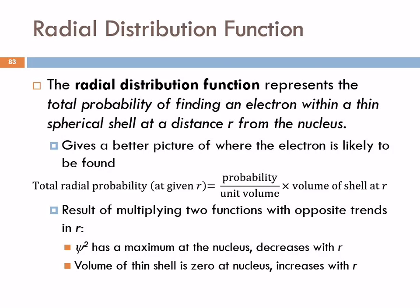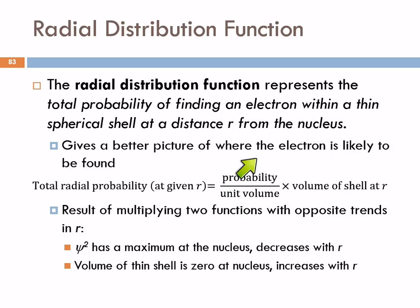So what's more accurate is the radial distribution function. This looks at the total probability of finding an electron in a thin spherical shell at a distance r from the nucleus — kind of like layers of an onion. What's the chance of it being in this layer of onion skin? And as you get bigger and bigger, farther and farther out, the onion layer gets larger in volume. The radial probability is the probability divided by the unit volume times the volume of the shell.